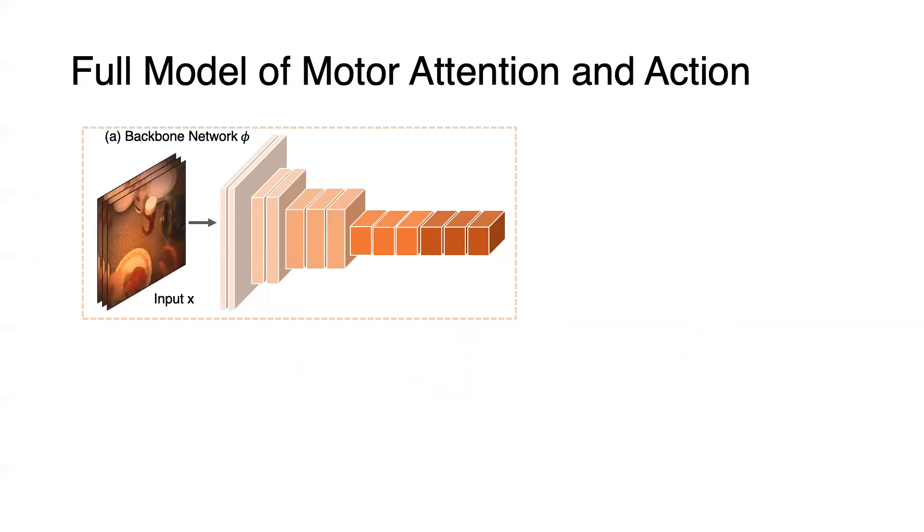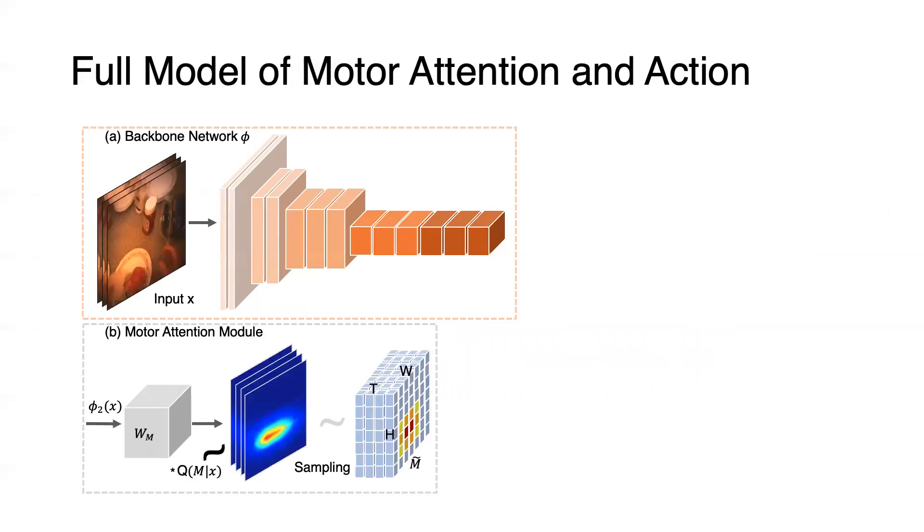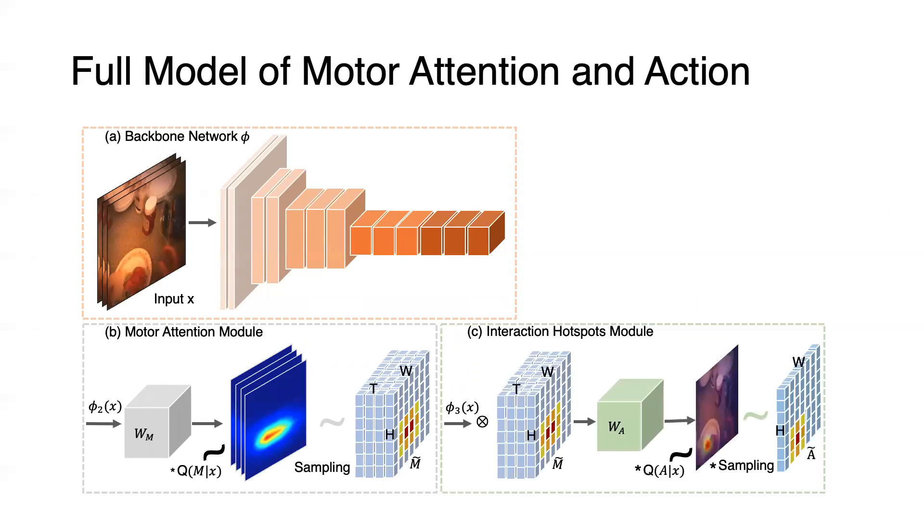Putting everything together, we have the following full model. We adopt a 3D convolutional network as a backbone. We then adopt the aforementioned stochastic units to generate sampled motor attention from the network feature of the second convolutional block. The sampled motor attention is used to guide the interaction hotspots estimation. The similar stochastic units generate sampled interaction hotspots from the network feature of the third convolutional block.